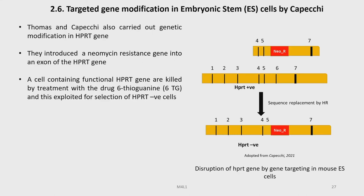Let us now discuss targeted gene modification in embryonic stem cells as carried out by Capecchi. Thomas and Capecchi carried out genetic modification of the HPRT gene. They introduced a neomycin resistance gene into an exon of the HPRT gene. Cells containing a functional HPRT gene are killed by treatment with the drug 6-thioguanine (6TG), and this was exploited for selection of HPRT-negative cells.